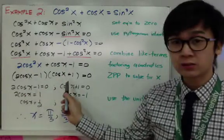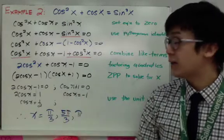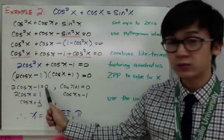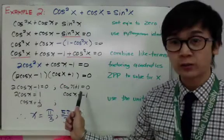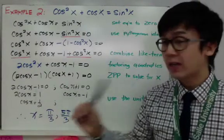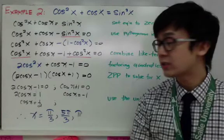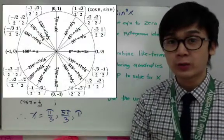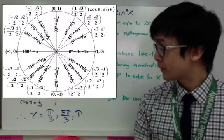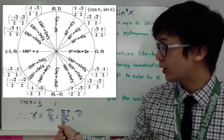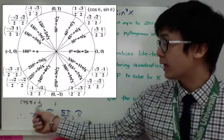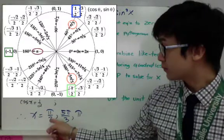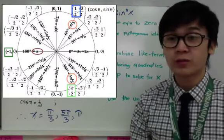Since it's factorable, I use the zero product property: two cosine x minus one equals zero and cosine x plus one equals zero. Solving gives two values: cosine x equals one half and cosine x equals negative one. Using the unit circle, x equals pi over three, five pi over three, and pi.